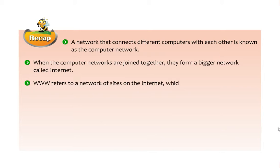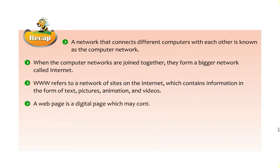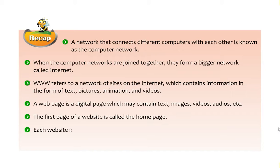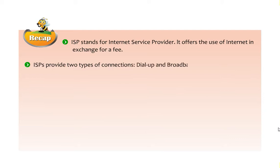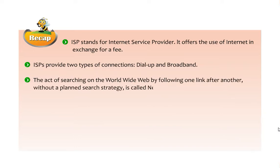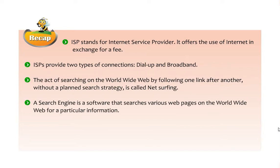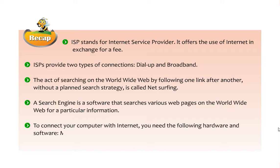WWW refers to a network of sites on the internet containing information in the form of text, pictures, animation, and videos. A web page is a digital page containing text, images, videos, audios, etc. The first page of a website is called the home page. Each website has a unique address called the URL. ISP stands for Internet Service Provider. ISPs provide dial-up and broadband connections. Net surfing means browsing the web by following links. A search engine searches web pages for information. To connect to the internet you need a modem, internet connection, telephone line, and web browser.